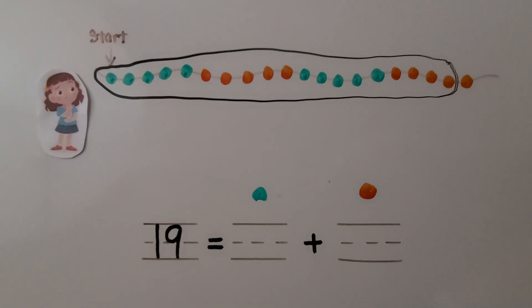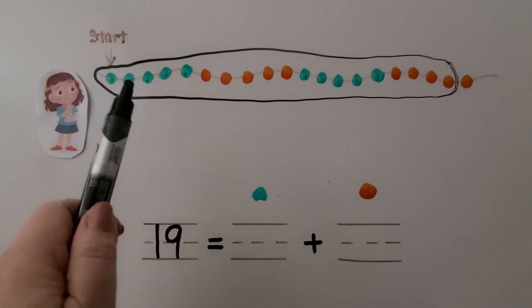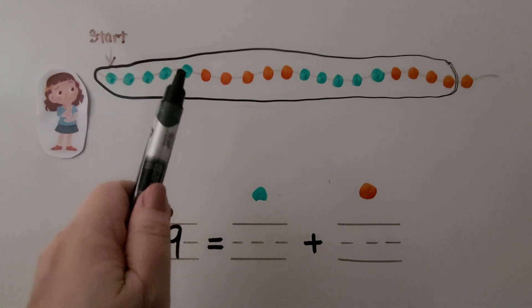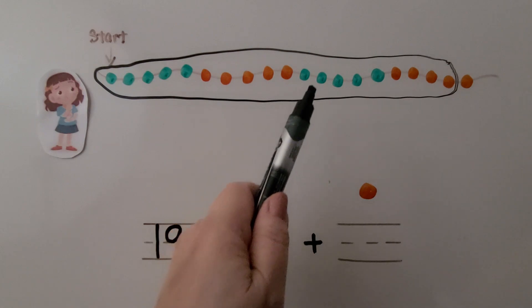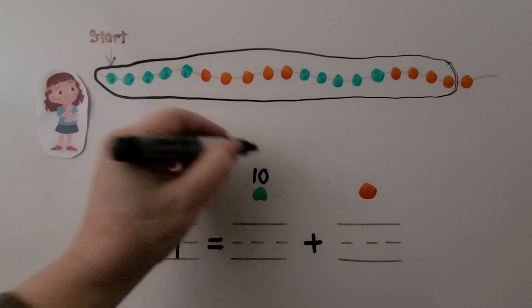Did we circle more green beads or more orange beads? We can count the green beads. 1, 2, 3, 4, 5, 6, 7, 8, 9, 10. We circled 10 green beads.